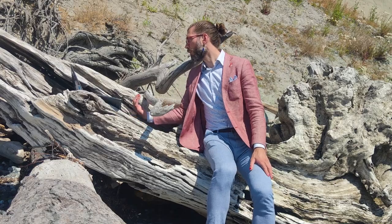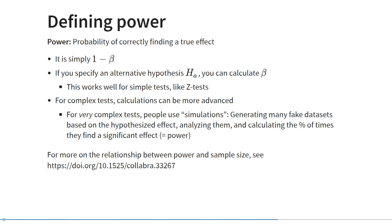This brings us to the concept of power. Power is the probability that you correctly find an effect that is true in a population — nothing other than 1 minus beta. If you specify an alternative hypothesis, you can calculate beta. This works well for simple tests like the z-test. For complex tests, however, power calculation can be very difficult. For very complex tests, people use simulation — creating many fake data sets based on the hypothesized effect, analyzing all of these fake data sets, and calculating the percentage of times that they find a significant effect. That percentage is the power.